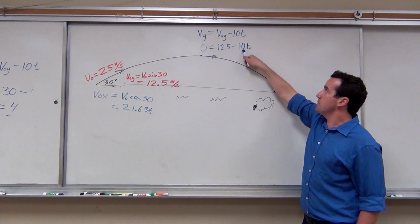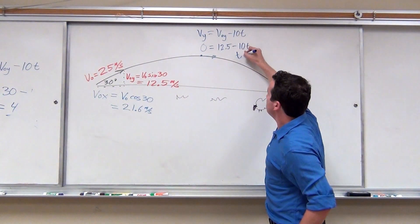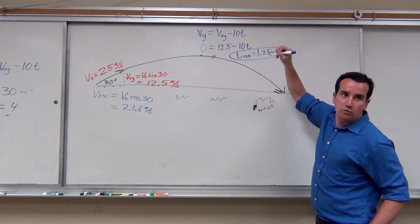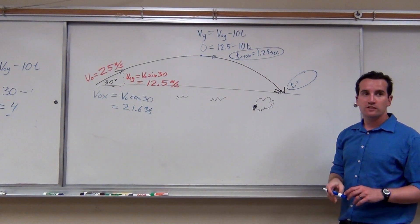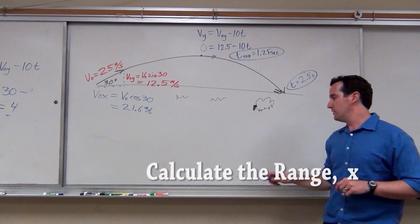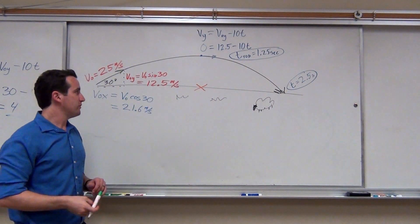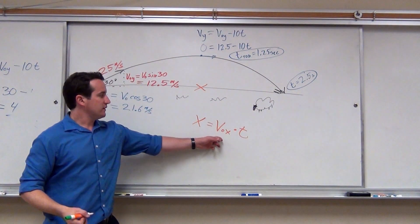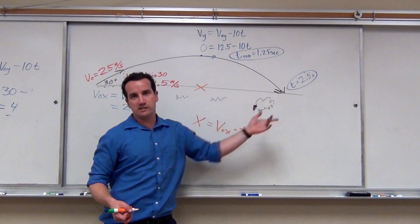The time at the top is 1.25 seconds, which makes the total time of flight 2.5 seconds. Now we want to find X, the distance traveled in the X direction. Do you remember the formula for the distance traveled in the X direction? X equals VOX times T. The initial velocity never changes, so it might as well just be called VX times the time of flight. Velocity times time equals distance.